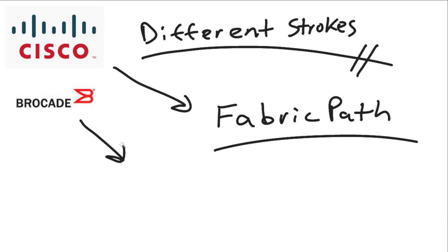Brocade implements TRILL and their version is called VCS—VCS technology. And the switches that they have that implement this VCS TRILL technology are called VDX switches. So, pretty confusing as different vendors are implementing TRILL with variations and renaming it as such.